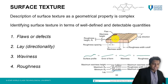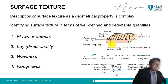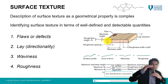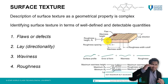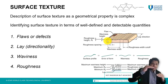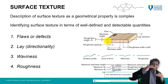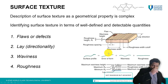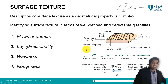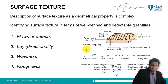Next we move on to waviness. Waviness is basically defined as the deviation between the highest peak and the lowest valley — so this is waviness in terms of height. When we talk about the horizontal distance between the maximum crest and the maximum peak, that horizontal distance is the waviness width. These are the first three important characteristics required for defining surface texture.